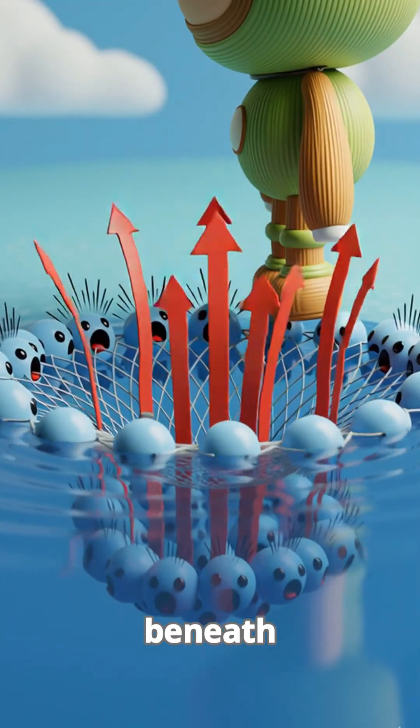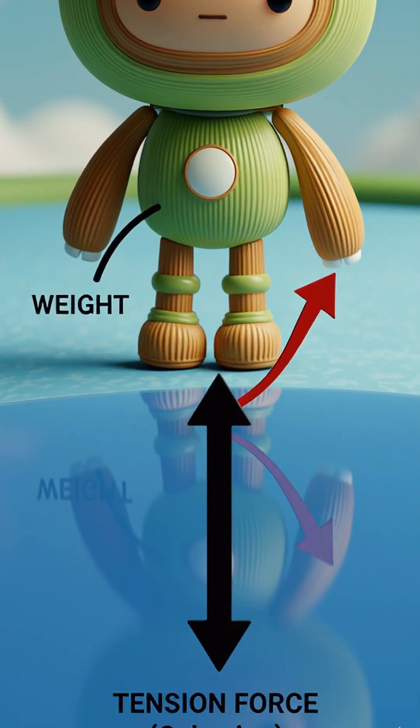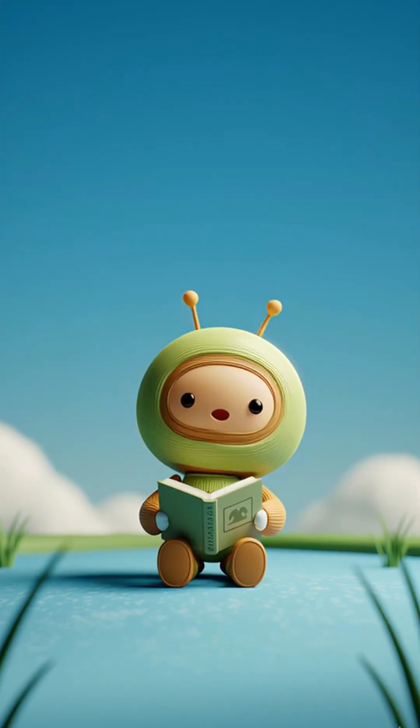The water molecules beneath the dent instantly fight back. The inward pull of the trampoline creates an upward counterforce, perfectly balancing the insect's minuscule weight.